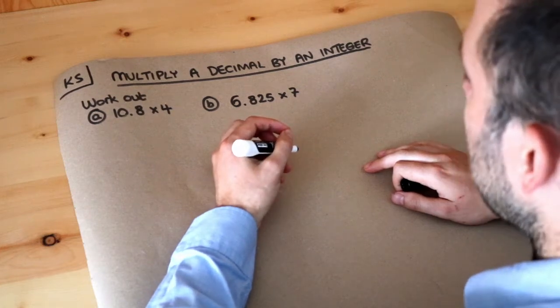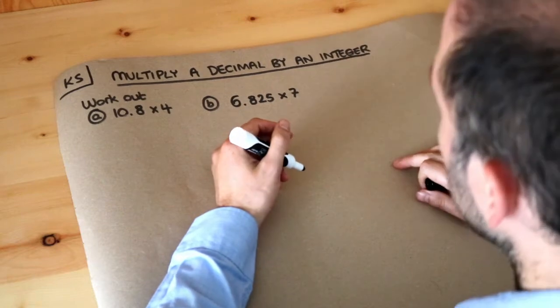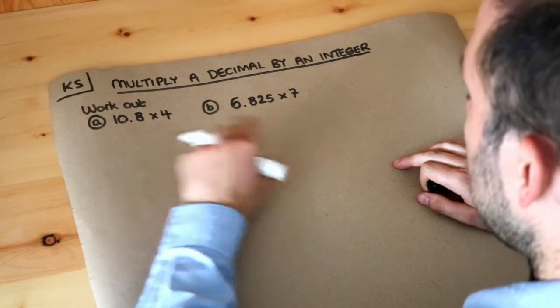Hello and welcome to this Dr. Ross Math's key skill video on multiplying a decimal by an integer, where integer just means whole number. So we've got a decimal times by a whole number.